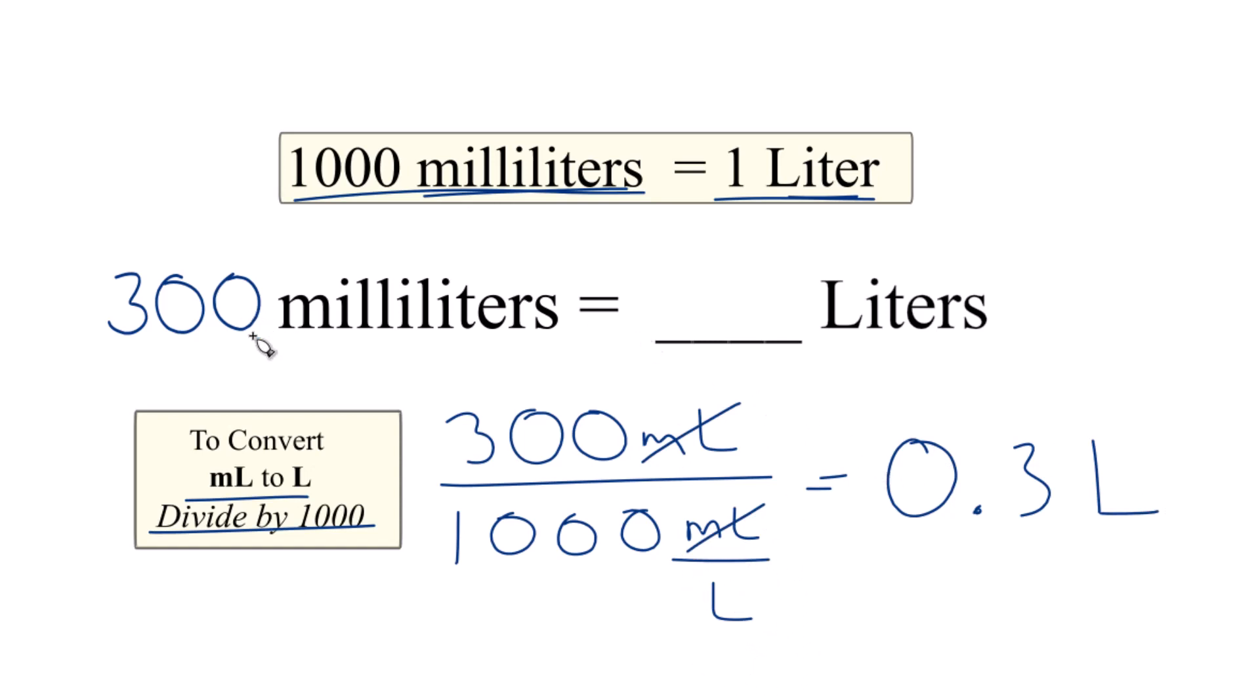So that's how you do it. That's how you convert 300 milliliters to liters. The answer is 0.3 liters.